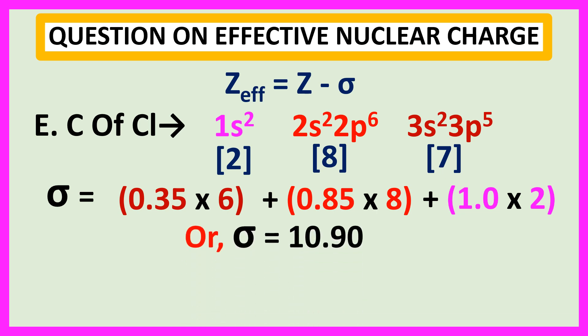Or sigma is equal to 10.90. Now, we put the value of sigma in our previous equation. Z effective is equal to 17, which is the atomic number of chlorine, minus 10.90, the value of sigma, or Z effective is equal to 6.10.